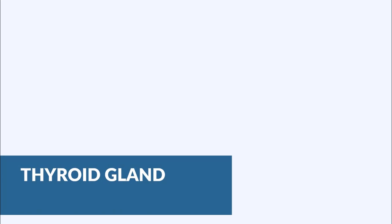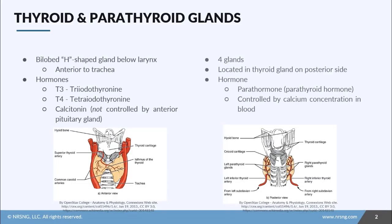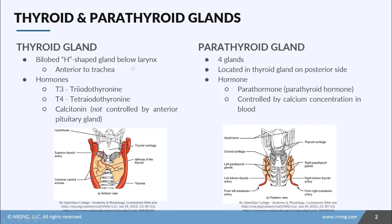In this lesson, we're going to take a look at the thyroid and the parathyroid glands. The parathyroid glands are located on the thyroid gland. The thyroid gland is a bilobed H-shaped gland that sits just below the larynx and anterior to the trachea. This is the anterior view of the larynx — you've got the larynx and then you've got the thyroid gland right here.